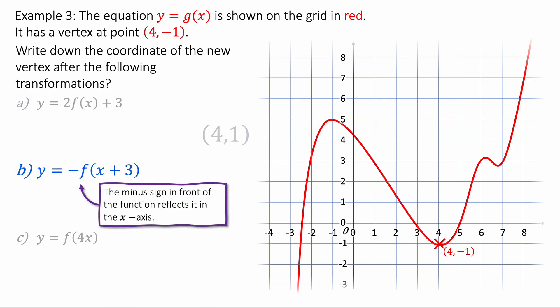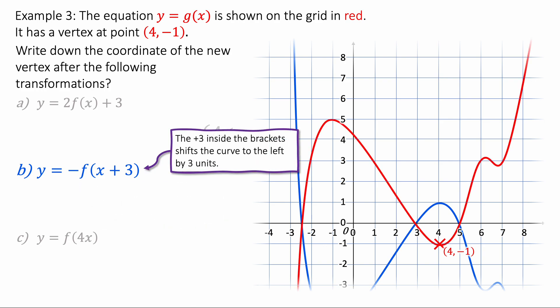Next we've got y equals minus f of x plus 3. The minus sign in front will reflect it vertically in the x axis. And then the plus 3 on the inside of the bracket will shift it 3 units to the left. Like this. And the new coordinate will be 1, 1.